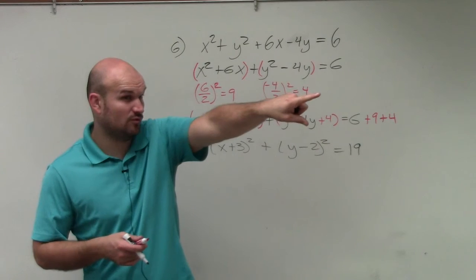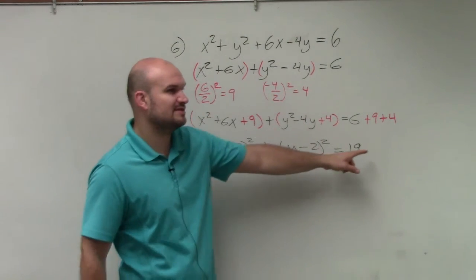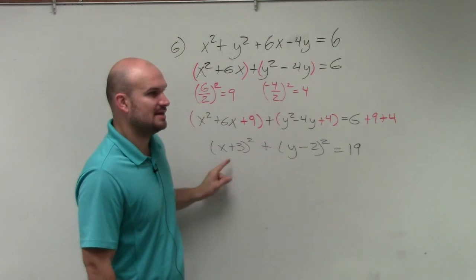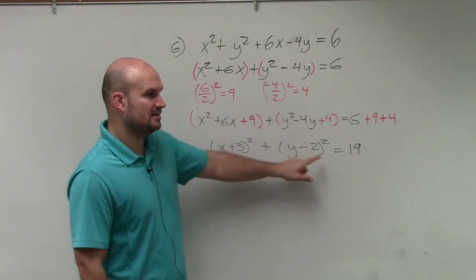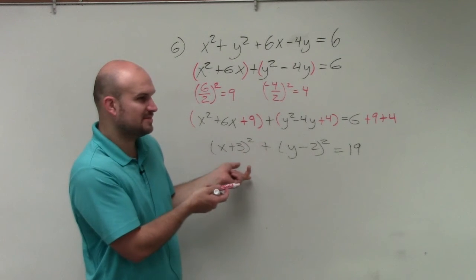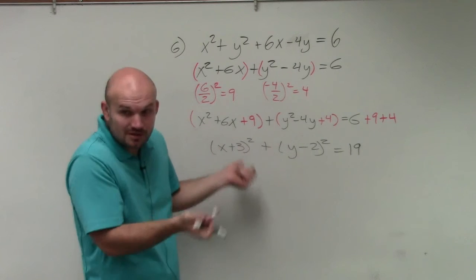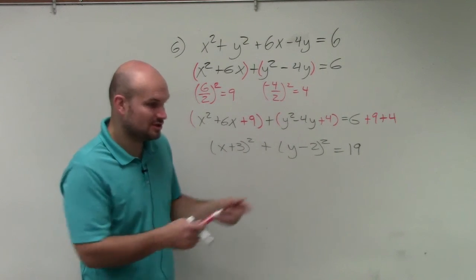Now, if we still want to set this equal to 1, we could divide by this. But what happens, guys? If we divide by this, we get the exact same, right? 19 would be on both sides. So therefore, do you guys remember what we talked about last class? Or what would this be an equation of? A circle. This is a circle.